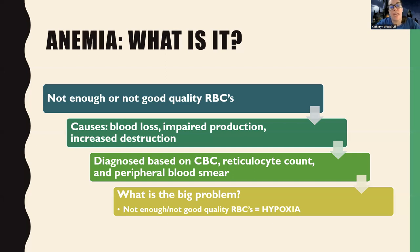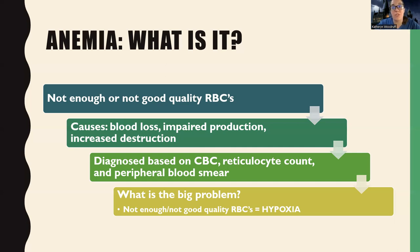We also look at the reticulocyte count — those are the baby red blood cells. It's helpful because it tells me: am I losing too many, or am I not making enough? If I don't have a lot of baby red blood cells, there's obviously an issue with production — something's wrong in my bone marrow. Then there's a peripheral blood smear, where they look at the size of your blood cells — are they big, are they tiny? They can tell a lot about anemia just by looking at them, because it could be not good quality red blood cells. Maybe I have plenty number-wise, but there's something off about the way they're being produced.